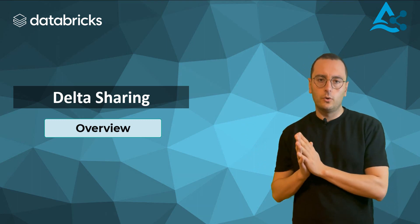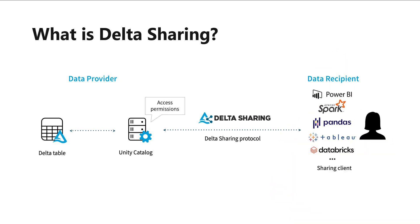What is data sharing? Data sharing is an open protocol developed by Databricks for secure data sharing with other organizations, regardless of the computing platform they use. Azure Databricks built data sharing into the Unity Catalog data governance platform, enabling an Azure Databricks user, called a data provider, to share data with a person or group outside of their organization, called a data recipient. Data sharing's native integration with Unity Catalog allows you to manage, govern, audit, and track usage of shared data on one platform. Your data must be registered in Unity Catalog to be available for secure sharing, and the data must also be in Delta table format.